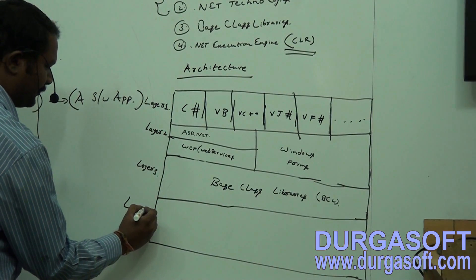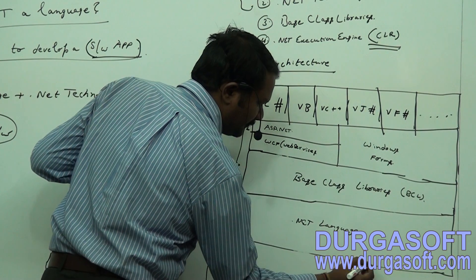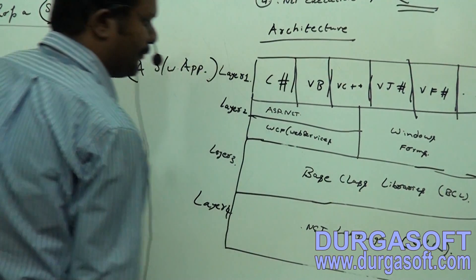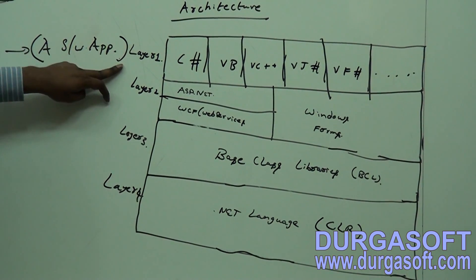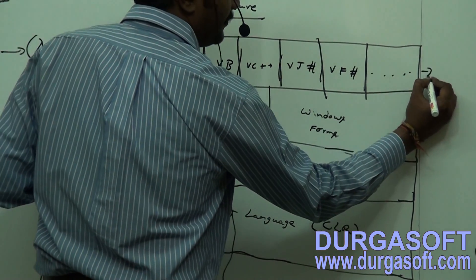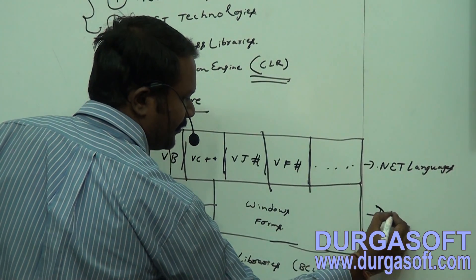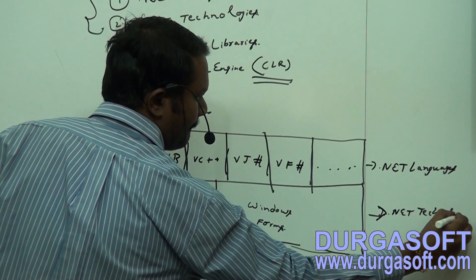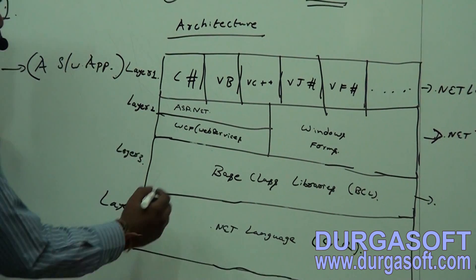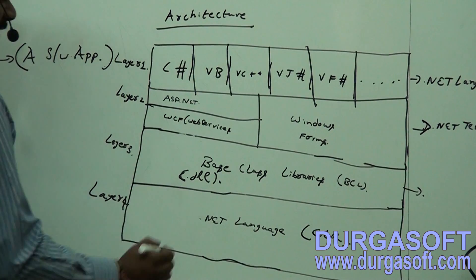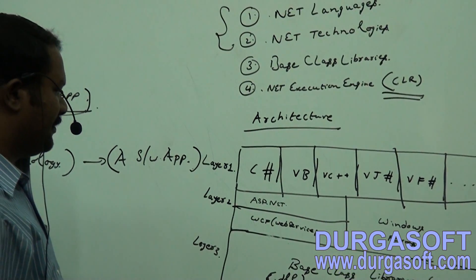The fourth layer is the .NET Execution Engine. This is nothing but CLR — Common Language Runtime. This is the architecture diagram. Layer 1 consists of all the .NET languages. Layer 2 consists of all the .NET technologies. Layer 3 consists of Base Class Libraries — all the DLL files, that is, Dynamic Link Library files, which are nothing but reusable files. The fourth layer is CLR — Common Language Runtime.